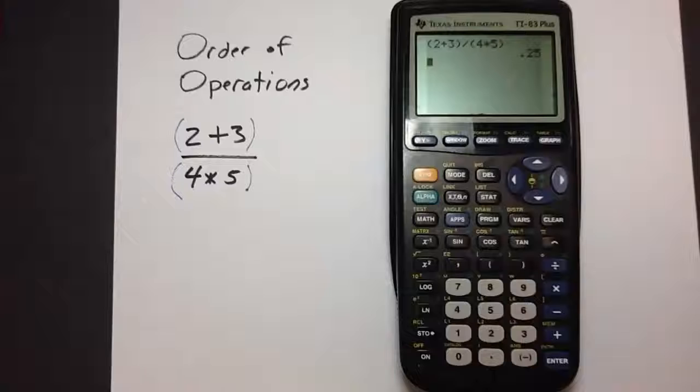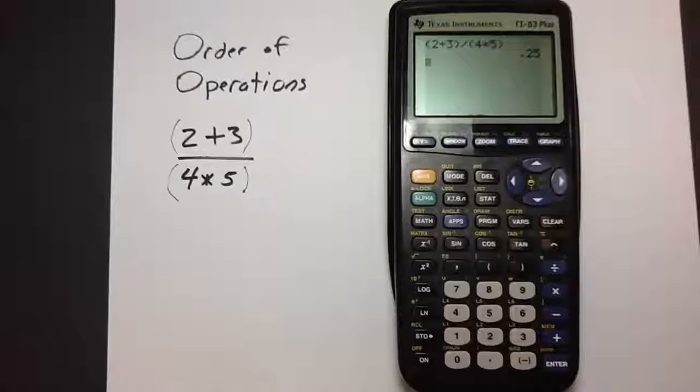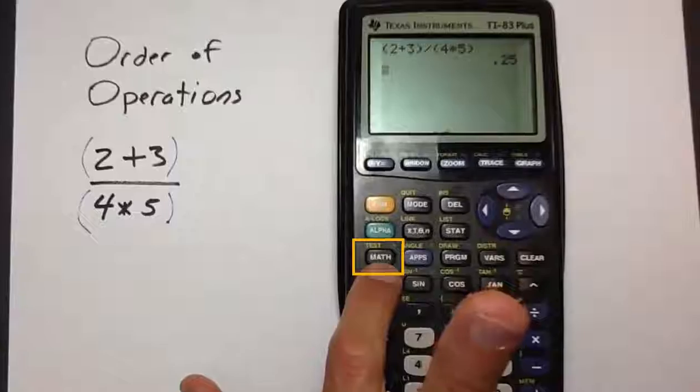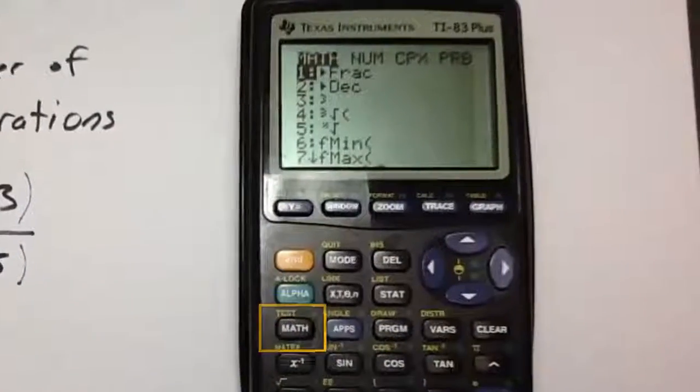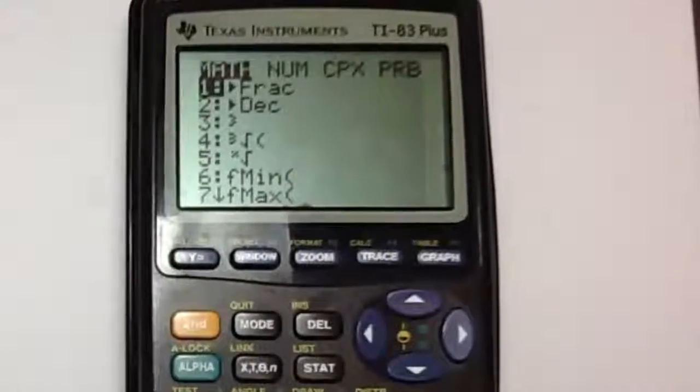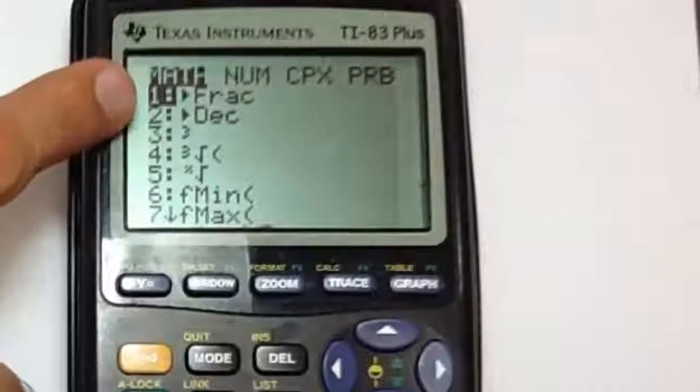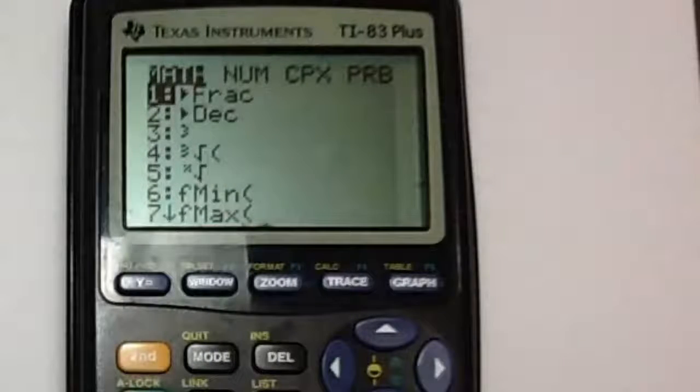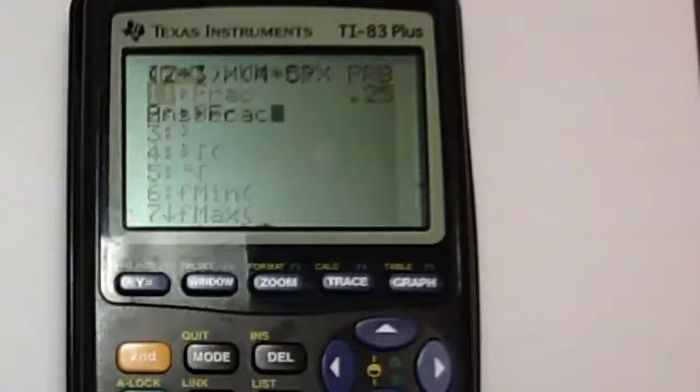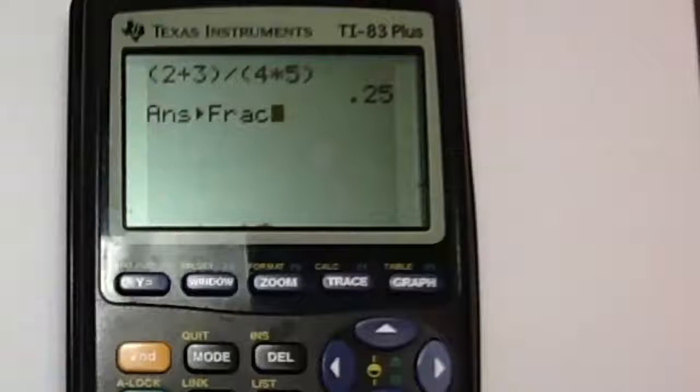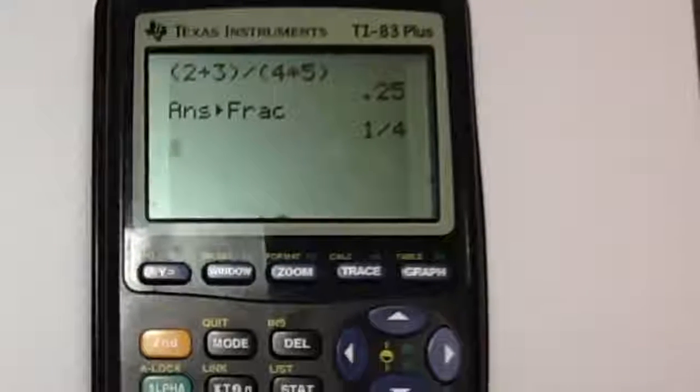Now, in the TI-83, you may also change this into fractional form by pressing this button that says math. This will bring up a complicated looking menu. We only need option 1, the option that says arrow fraction. We press enter, and then press enter a second time. This gives us 0.25.